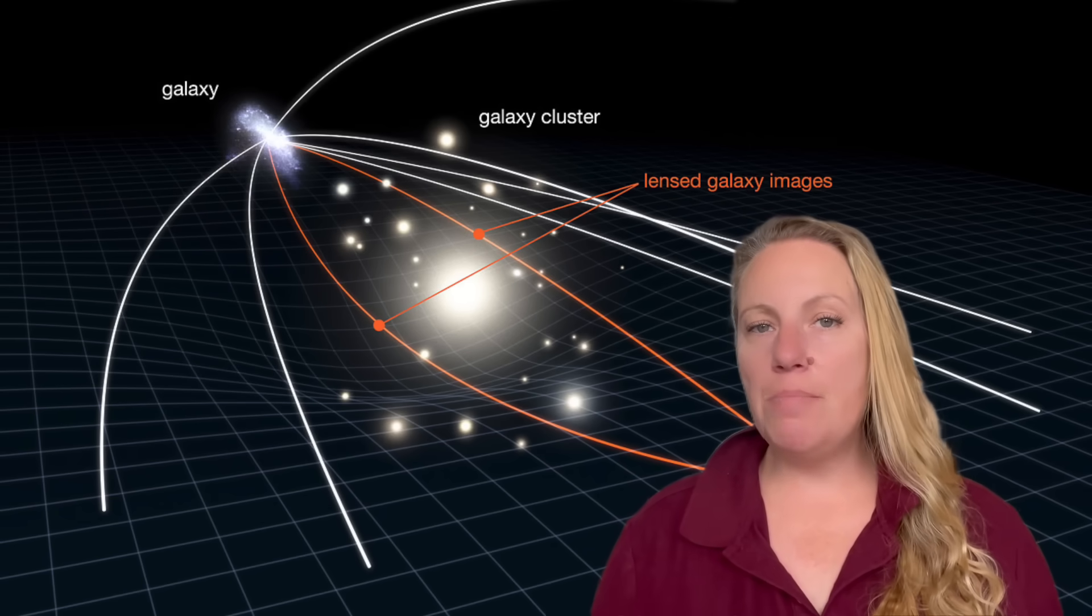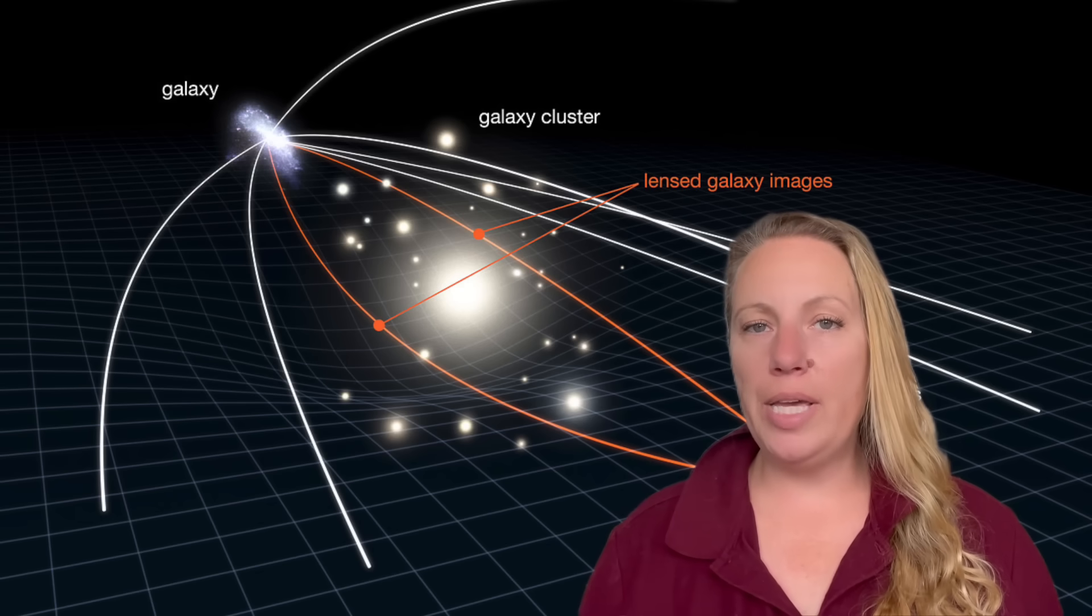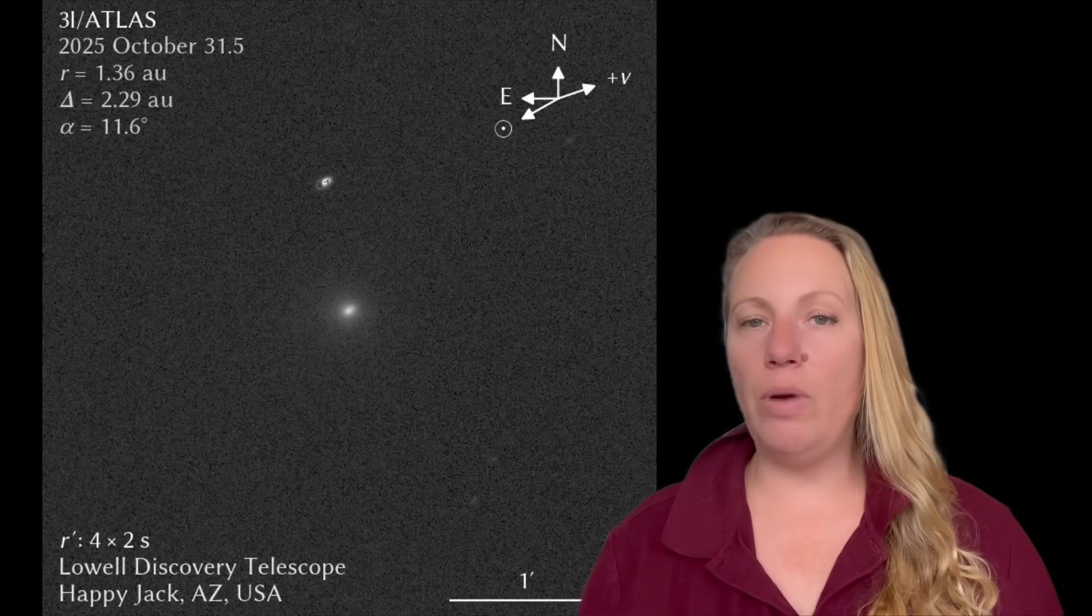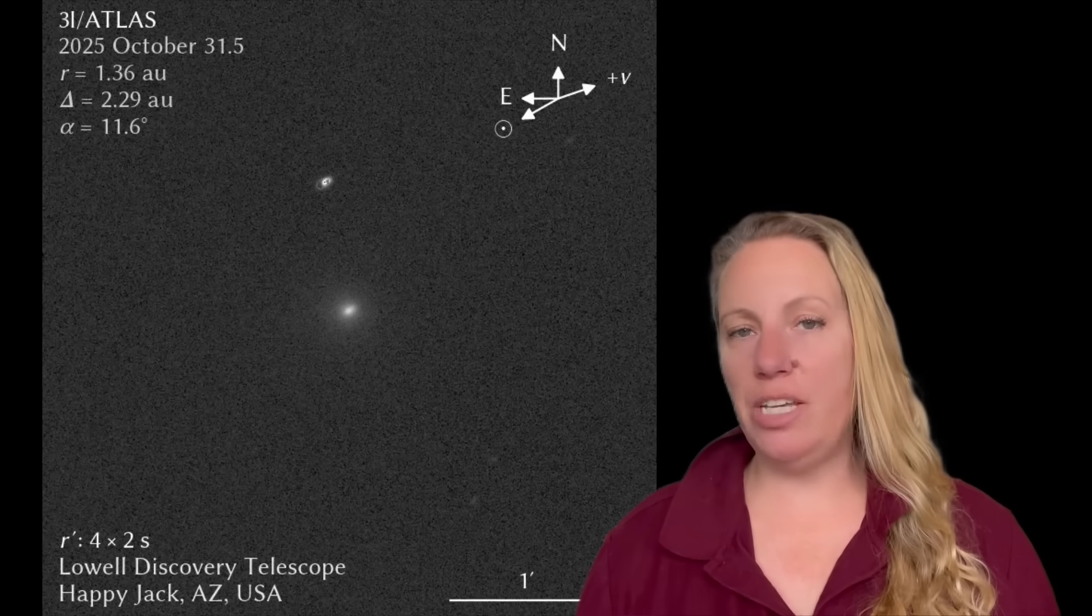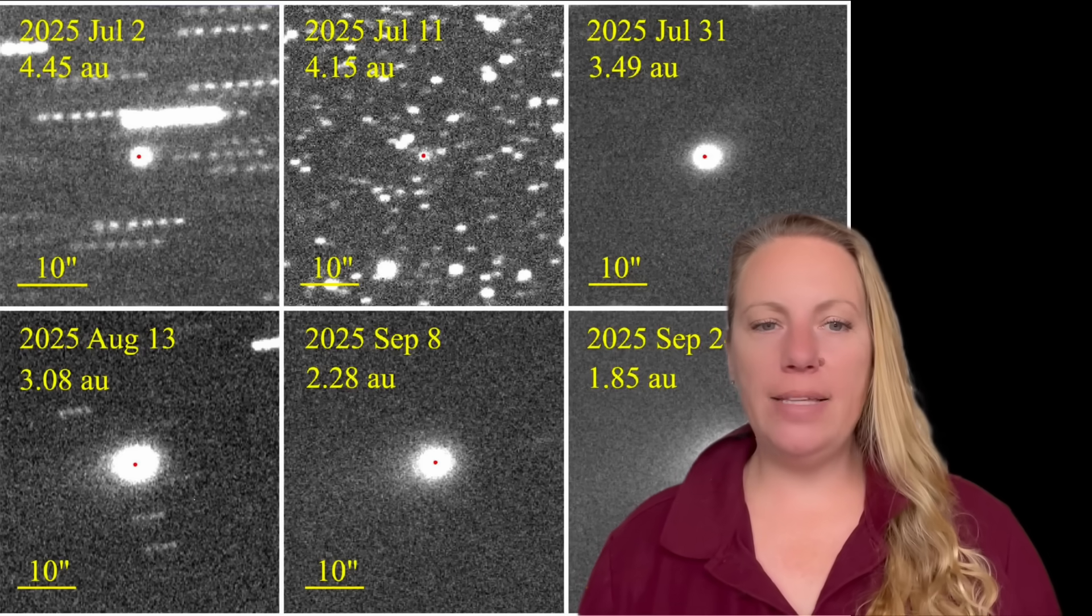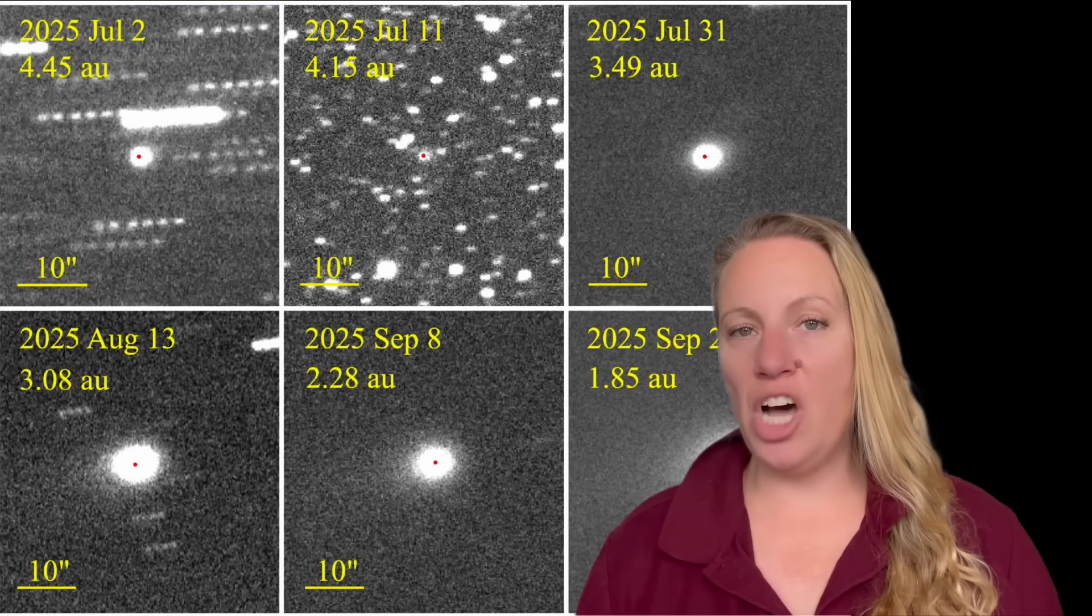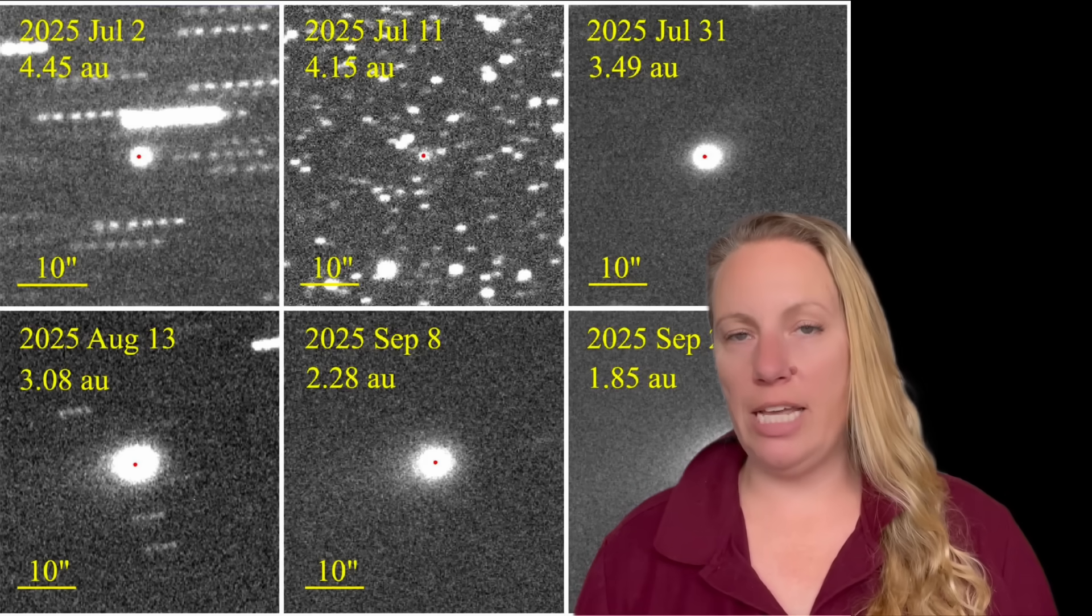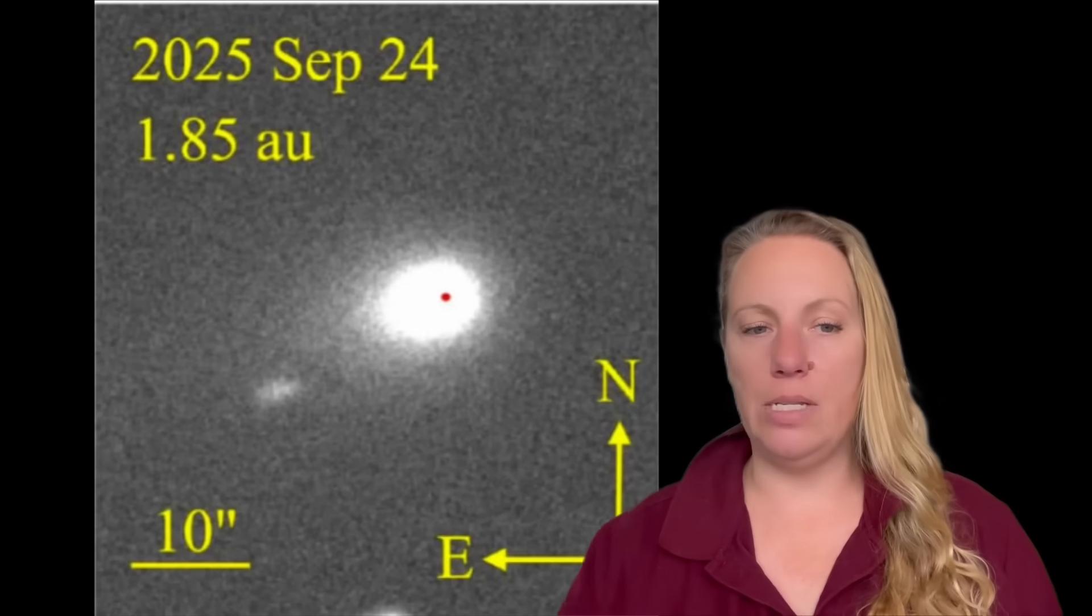Because if we can measure that lensing effect, it gives us extra information about 3i Atlas - its distance, its path, and how the sun's gravity is interacting with the object. Especially because it already has so many weird properties. Measuring the lensing is another piece of the puzzle. And if things will not add up, that means the lensing effect doesn't match expectations, that signals something unusual again about this object.